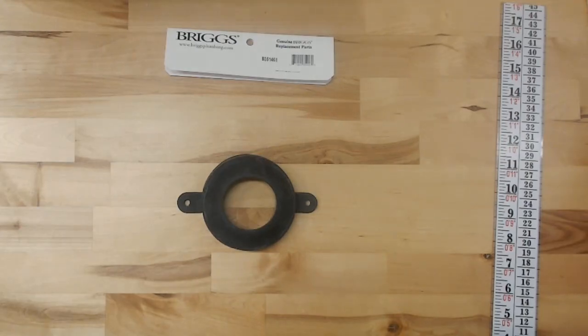This is a look at the genuine Briggs replacement tank to bowl gasket. This gasket's part number is B351461.